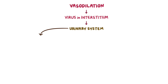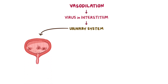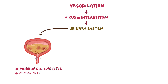If the virus spreads to the urinary bladder, it causes inflammation and bleeding of the mucosa, which is called hemorrhagic cystitis. All this blood can form clots within the bladder, which come to lie over the ureteral opening and obstruct the flow of urine. This leads to urinary retention.